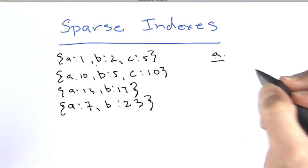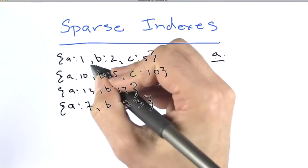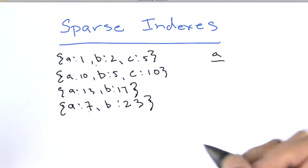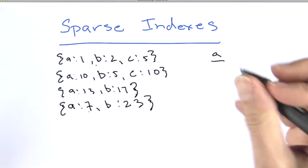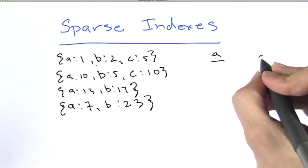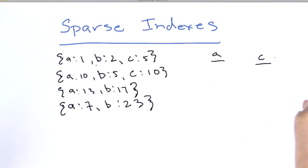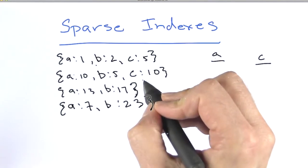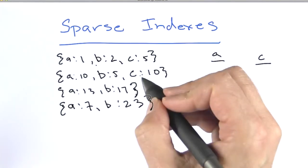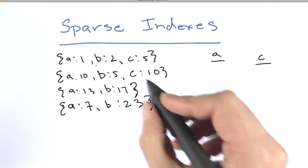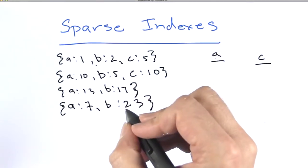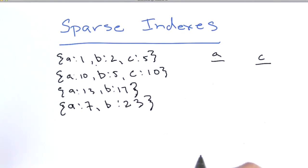If we wanted to create a unique index on A, that would work fine because A has a different value for each document and A is included in every document. But let's say we wanted to create a unique index on C. The first document and the second document both have C values, so that'll work just fine. But the third and fourth don't have C values, and it won't work.